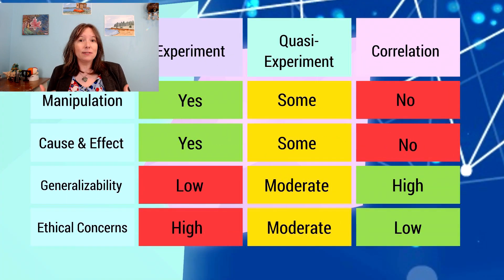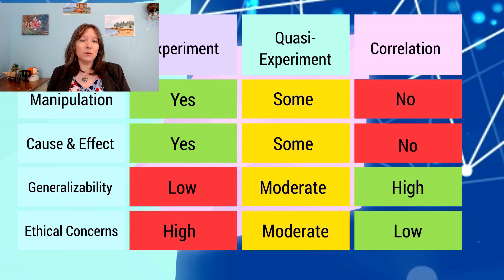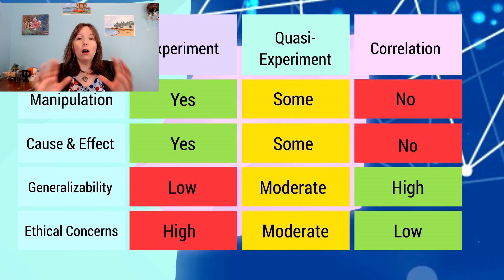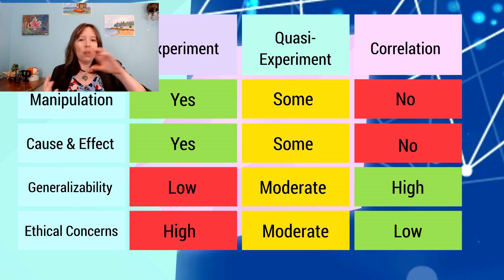Some types of research might be unethical if we give people conditions that could cause harm. A true experiment is when researchers attempt to control all of the independent variables — controlling whether it's night or day on the simulator and whether a person ingests a cannabis brownie or not. In a true experiment, you can assert cause and effect. For example, you can say driving at night with cannabis caused more accidents on the driving simulator.